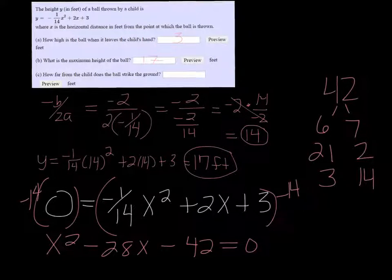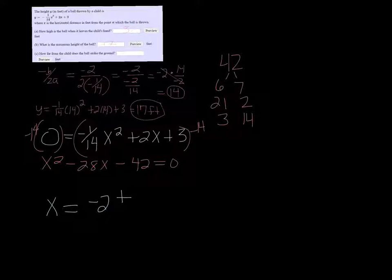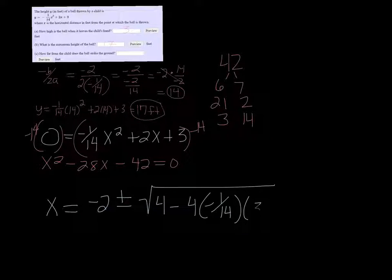So the quadratic formula is a little cumbersome, but it's fail-proof. It's always going to work. So x is equal to negative b, which is negative 2, plus or minus the square root of b squared, which is 4, minus 4 times a, times c, all over 2 times a.